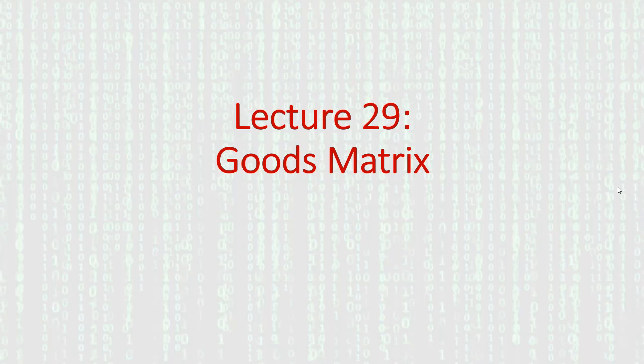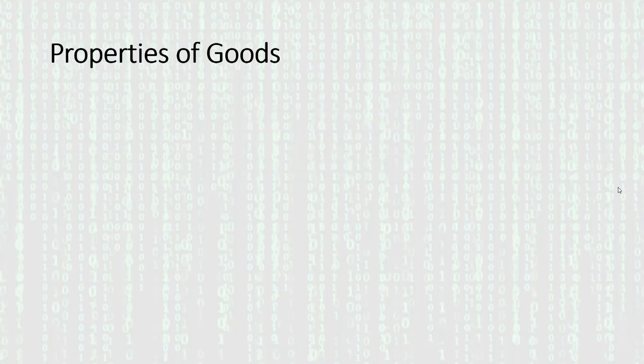Hello again, Professor Watts here. We'll start off today by looking at the properties of goods. So far we haven't gotten into this kind of analysis of goods — we've just addressed goods as things that are scarce and that people want. Now we want to delve into some aspects of goods that make certain goods different from other kinds of goods.